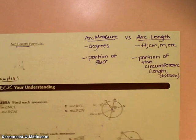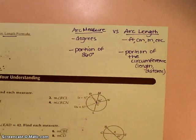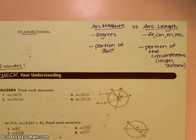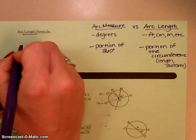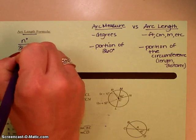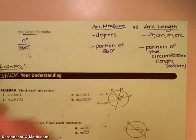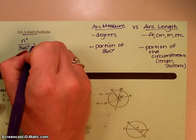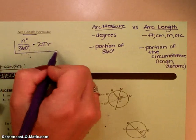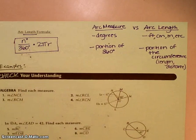So for arc length, the formula is this. N divided by 360. Remember that N, that's the measure of your central angle. So N divided by 360 times 2 pi R. So that's for arc length.